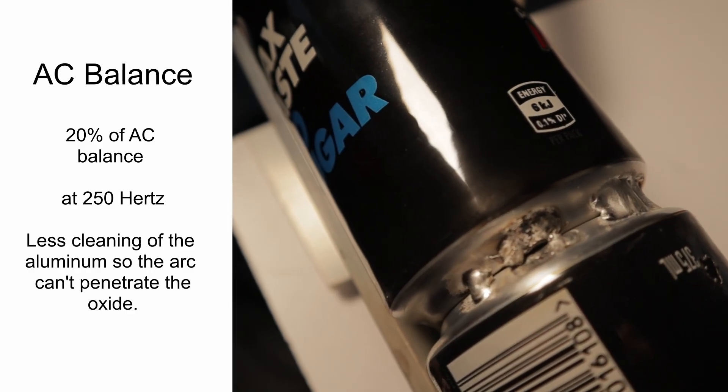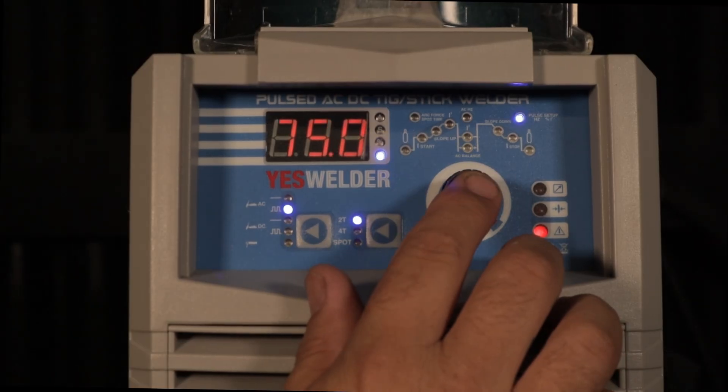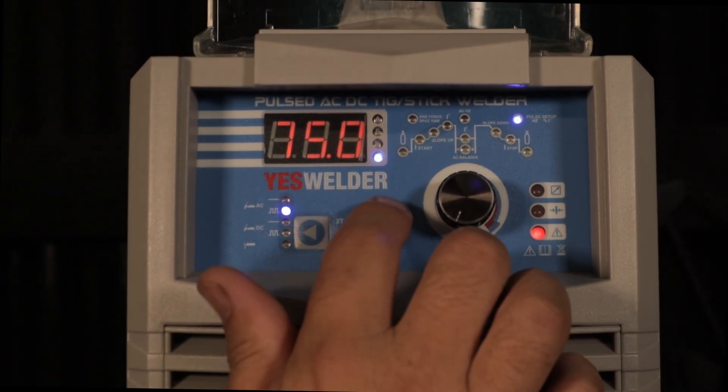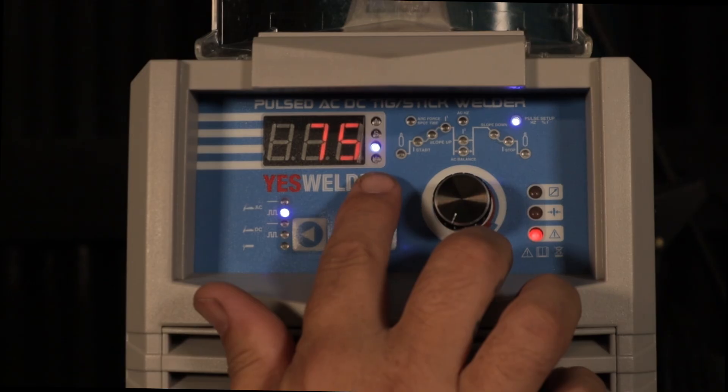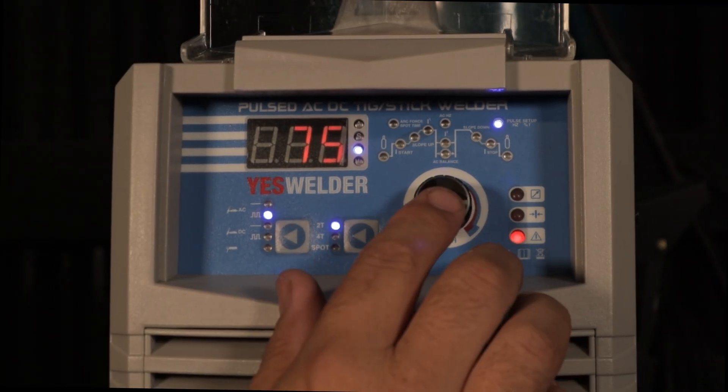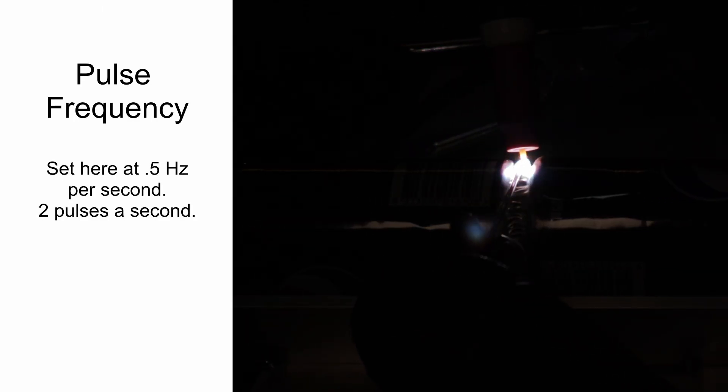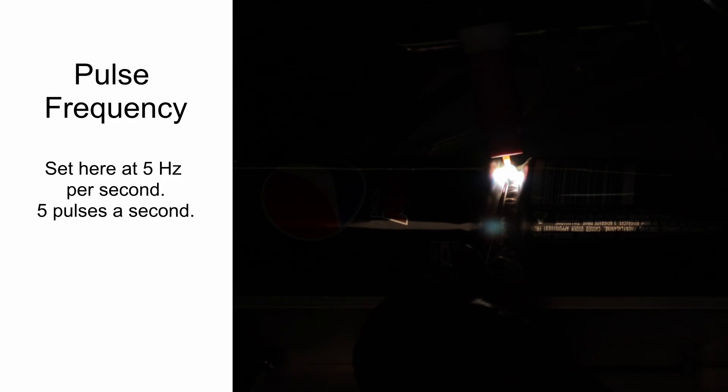The next selection is pulse frequency. This is where the amperage is cycling from high to low. I set these earlier at 38 and 5 amps. The range on this machine is 0.2 or 5 seconds up to 200 times per second. I have this set at 75 hertz, so that would be 38 amps for 75 percent of the time and 25 percent at 5 amps.